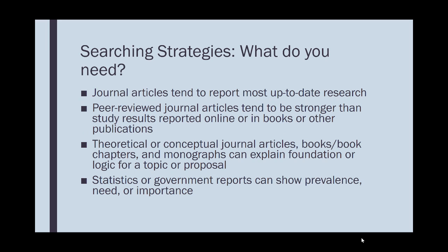For your searching strategies: journal articles tend to report the most up-to-date research, and peer-reviewed journal articles tend to be stronger than study results reported elsewhere, such as online or in books. Theoretical or conceptual journal articles, books, book chapters, and monographs can be useful in explaining the foundation or logic for a topic or proposal. Statistics or government reports can show prevalence, need, or importance of a particular topic area. You need to ask yourself what kinds of evidence you're looking for, then tailor your search to find that kind of evidence.